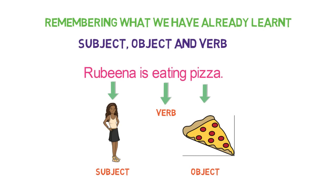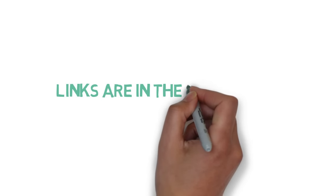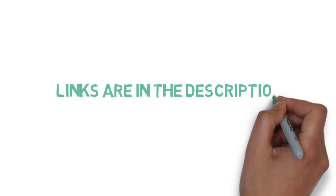Please note, to identify any object, we use a 'what' or 'whom' question. In this case, we used 'what' to identify the object. Please also check the lessons from parts of speech after this video for a detailed understanding about this topic. Links for all related videos are in the description.